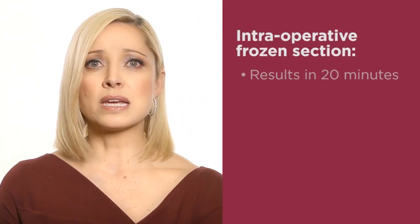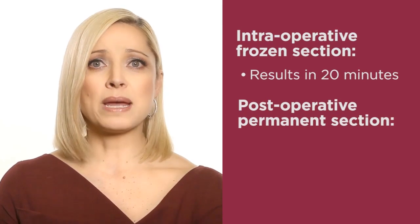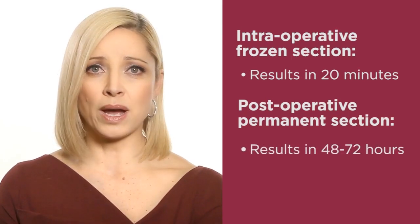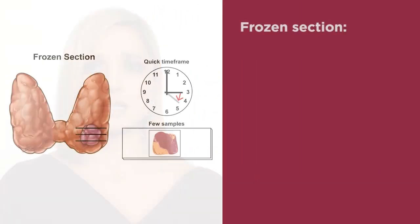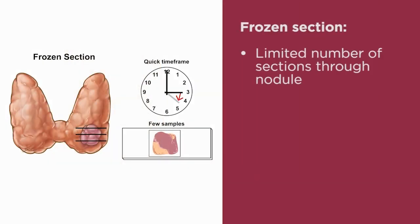There are limitations to the information that can be gained on frozen section compared with permanent section. While frozen section can take approximately 20 minutes, permanent section may take up to 48 to 72 hours to complete. A frozen section is performed by cutting through the thyroid nodule and placing a thin section onto a glass slide, which is examined under the microscope. The difference between frozen section and permanent section analysis is based on the number of sections made through the nodule and the remainder of the thyroid gland.